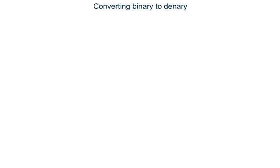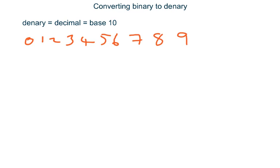We are all used to using denary or decimal. Denary or decimal is a numbering system that uses 10 different digits: 0, 1, 2, 3, 4, 5, 6, 7, 8 and 9. That's 10 different digits. So it's also sometimes called base 10.